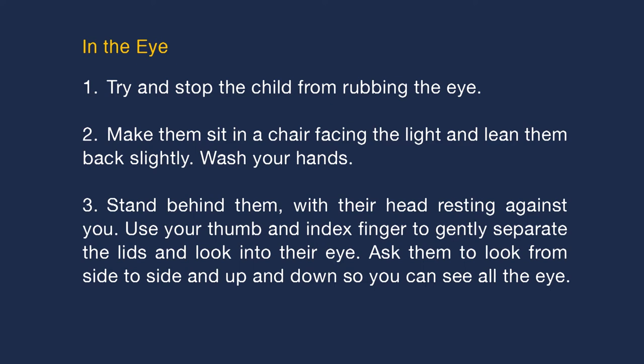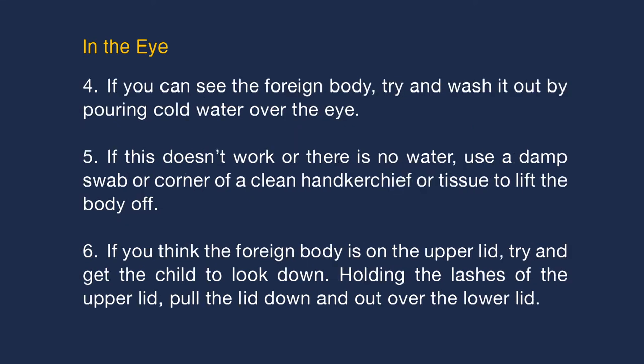Make the child sit in a chair facing the light and lean them back slightly. Wash your hands, stand behind them with their head resting against you, and use your thumb and index finger to gently separate the eyelids. Ask them to look from side to side and up and down. If you can see the foreign body, try to wash it out by pouring cold water over the eye. If this doesn't work, use a damp swab or corner of a clean handkerchief to lift the object off.